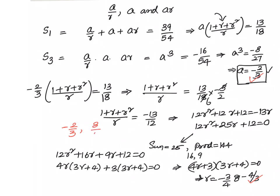-4/3, which is equal to 8/9. And the first number is a/r, that is -2/3 divided by -4/3, which equals to 1/2. So the numbers are 1/2, -2/3, and 8/9.